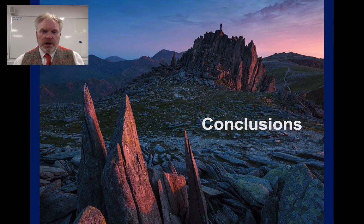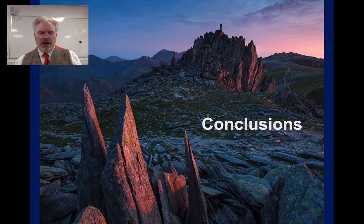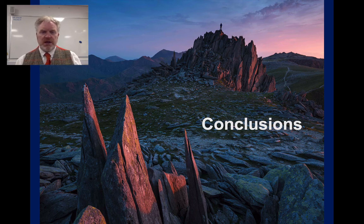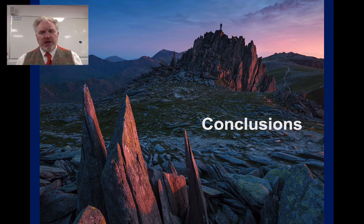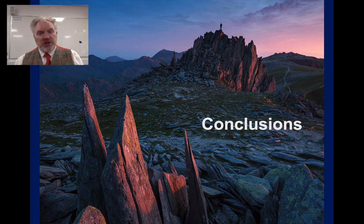As we see the sunset over Càrn Eige on top of the Glyders — an example of one of these nunatak environments — we've seen how these different climatic and environmental conditions during the Quaternary can each create their own distinctive set of deposits and landforms. As geologists, we can use these to reconstruct the changes in climate throughout the Quaternary, and by putting them together in sequences, we can actually start to interpret the change in those conditions over time.